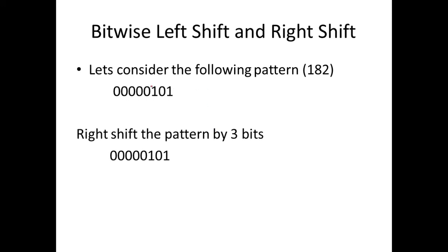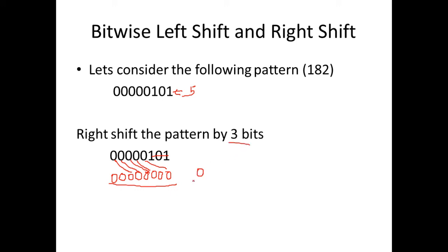Now let us take a look at right shift. We will again take the value 5 in binary form and right shift the pattern by 3 bits. While right shifting by 3 bits, we discard the 3 bits on the rightmost side and then push all the other bits to the right. The remaining empty positions are padded with zeros. So when you right shift 5 in binary format by three bits, the output will be zero.